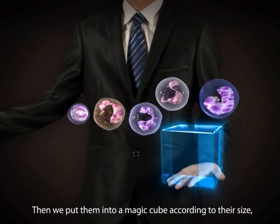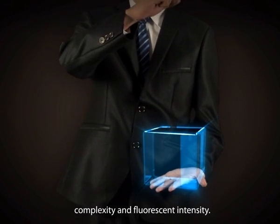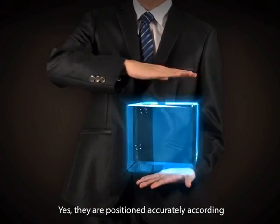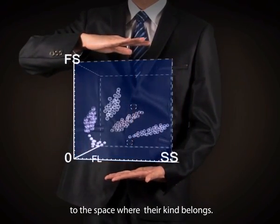Then we put them into a magic cube according to their size, complexity, and fluorescent intensity. Yes, they are positioned accurately according to the space where their kind belongs.